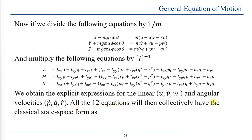All 12 equations collectively take the classical state space form: X-dot equals F of X and delta. Here, X represents the states of the system — all parameters describing the current state at any given time — and delta is the input to the system, which for an aircraft corresponds to the control inputs through the control surfaces.